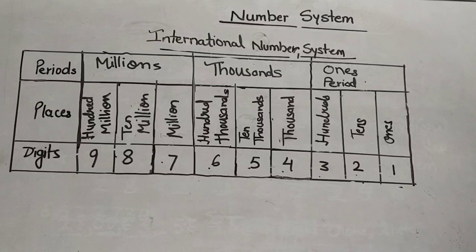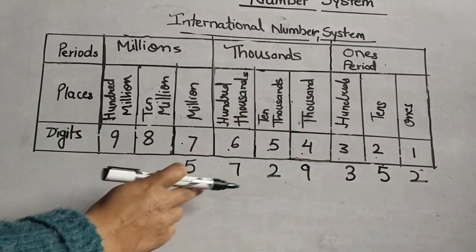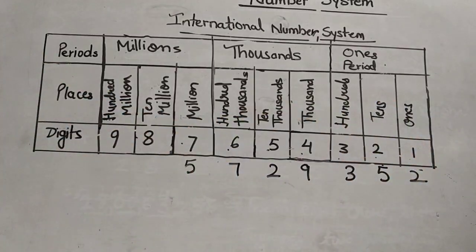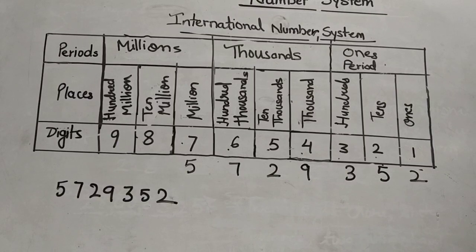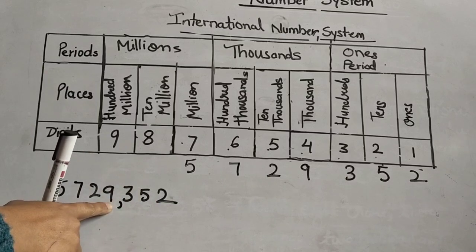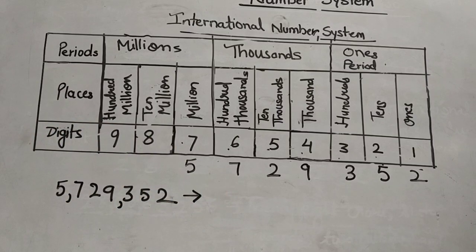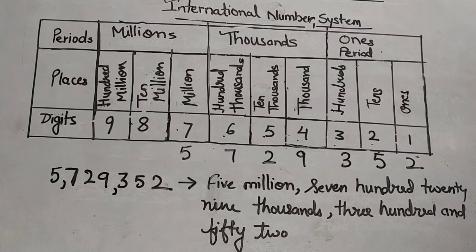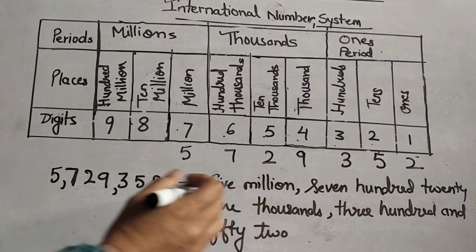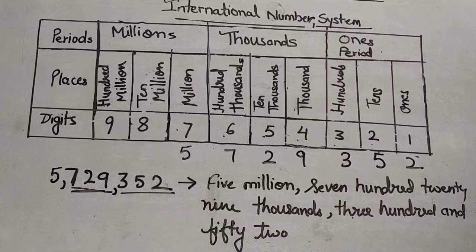Now let's learn to read and write numbers using the international number system. Look at the given seven-digit number: 5 7 2 9 3 5 2. Start placing commas from the right after every three digits: ones, tens, hundreds, then thousands, ten thousands, hundred thousands, and millions. We read it as: five million, seven hundred twenty-nine thousand, three hundred and fifty-two.